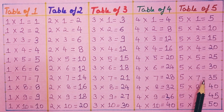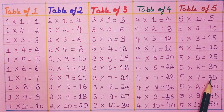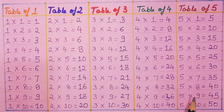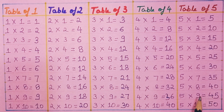Five sevens are thirty-five. Five eights are forty. Five nines are forty-five.